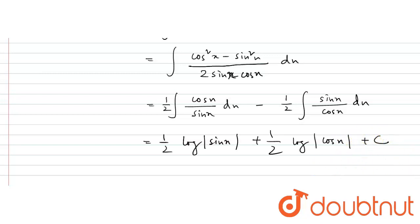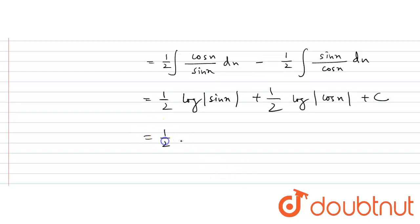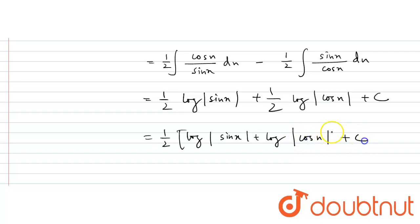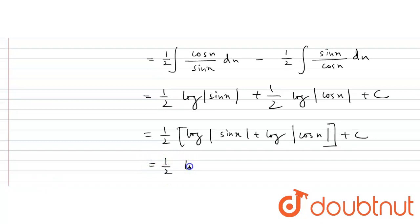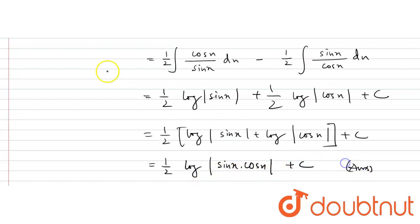Then I will write this: half log of sinx, half log of sinx plus log of cosx plus c. So the next line: half log of sinx·cosx plus c. This is the actual answer to this integration solution: half log of sinx·cosx plus c.